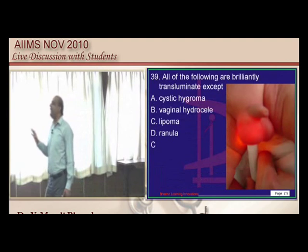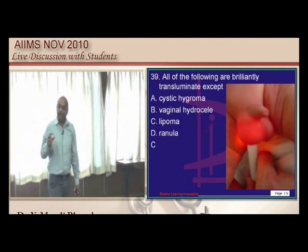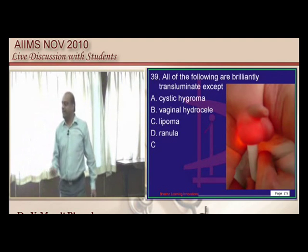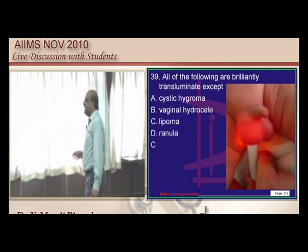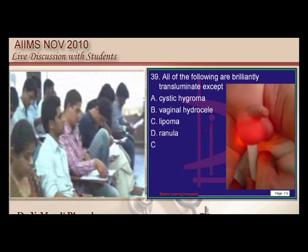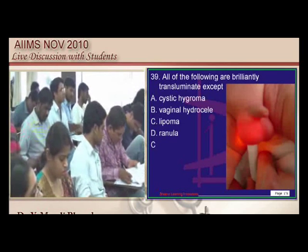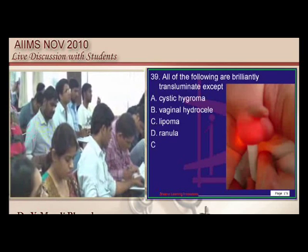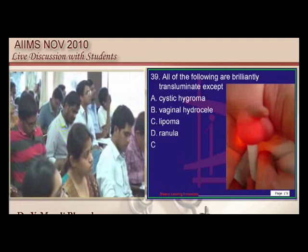A brilliantly transilluminating swelling — typical surgery short case. Vaginal hydrocele, cystic hygroma, and plunging ranula all transilluminate, but not lipoma, which is much thicker.